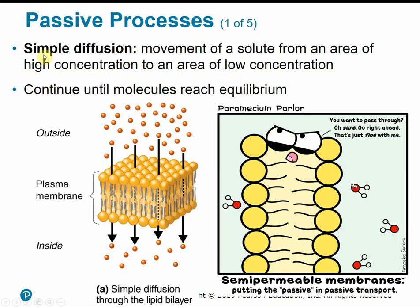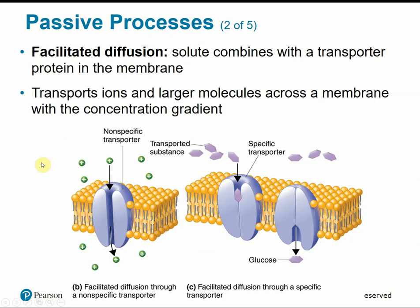One type of passive process is simple diffusion — solute goes from high to low concentration straight through the membrane. Diffusion will occur until equilibrium is reached; once particles are equal inside and outside the cell, net movement stops. Facilitated diffusion is still a passive process but involves assistance — it must be facilitated by a transporter protein. The solute combines with its transporter protein and is then carried through the membrane.